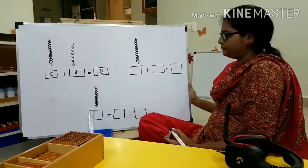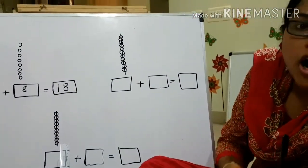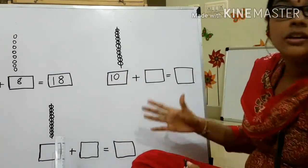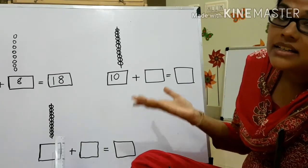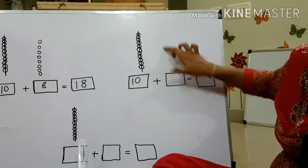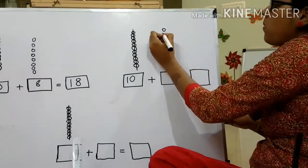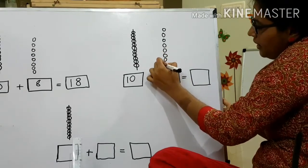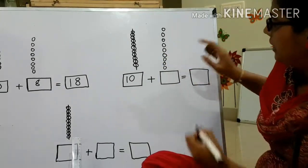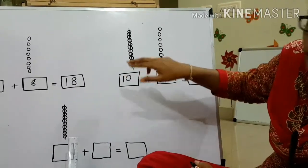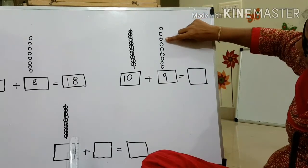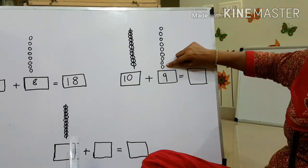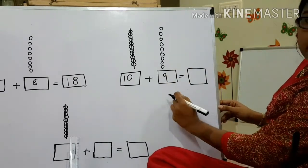We'll go to the next number. This is again 10. Ten and what makes 19? Ten and 9 makes 19. So we need 9 beads here. Let's place them: 1, 2, 3, 4, 5, 6, 7, 8, 9. Shall we check? 10, 11, 12, 13, 14, 15, 16, 17, 18, 19. So ten and 9 makes 19.